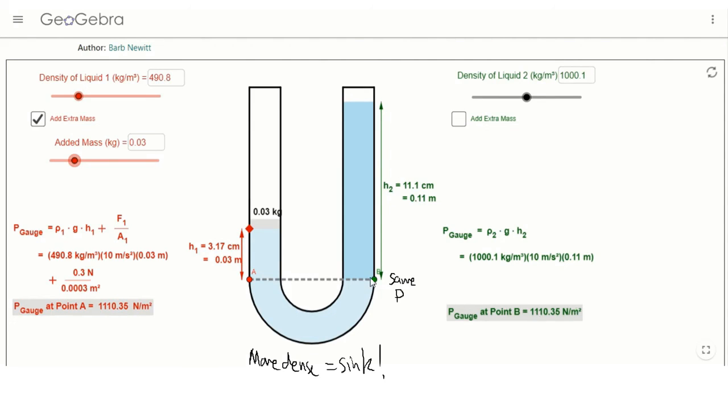So see, pressure on the right at this point is 1110, left side 1110. So that's the whole idea: left side equals right side, and you should be able to solve all kinds of questions based on that.